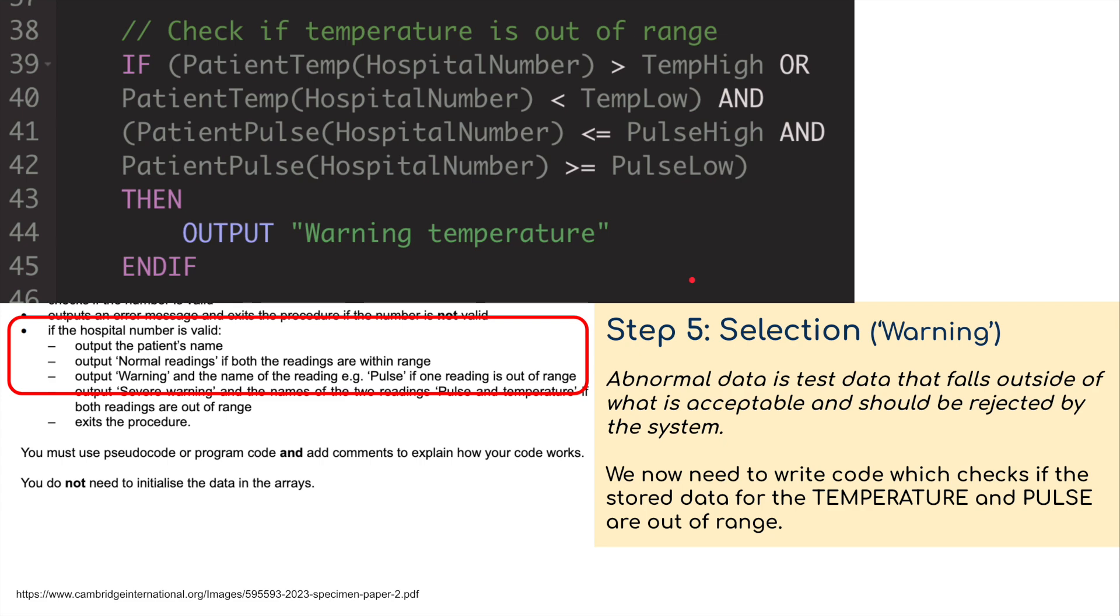We then need to move on to the warning messages. Output warning and the name of the reading, e.g. pulse, if one reading is out of range. We're going to do this for pulse and temperature separately, two separate if statements. First the temperature: if the patient temp is greater than temp high or less than temp low and pulse is okay, then output the warning temperature. So if these are out of range, we're going to get a warning message from the temperature.